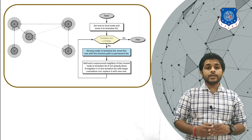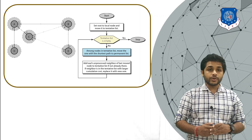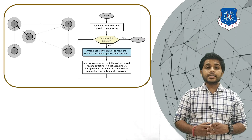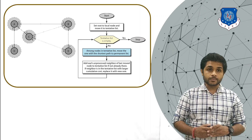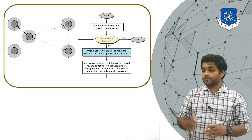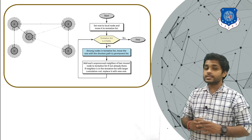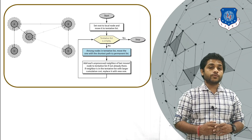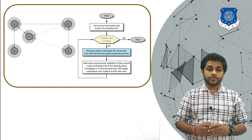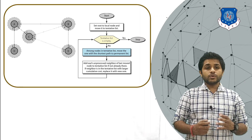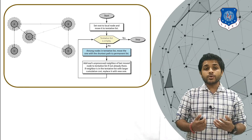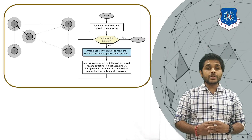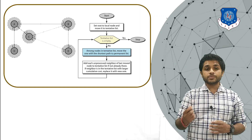To create the shortest path tree, each and every router will follow Dijkstra's algorithm. The flowchart you can see on the screen is the flowchart for Dijkstra's algorithm. Each and every router will use this algorithm to create their shortest path tree.